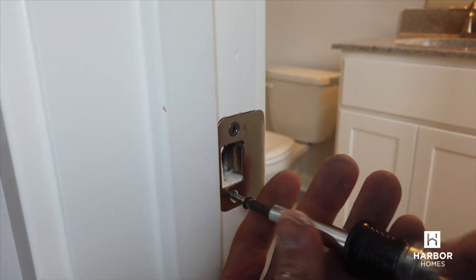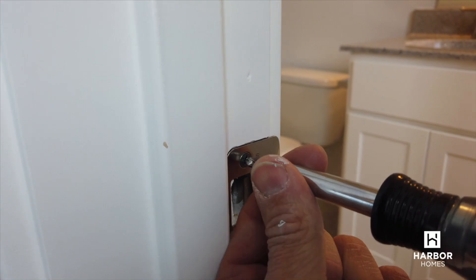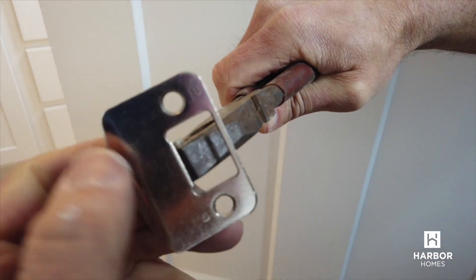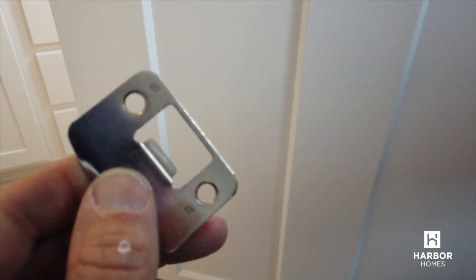For a rattling door that is slightly out of adjustment, use a screwdriver and pliers to adjust the strike plate. That should minimize the space between the door and the frame.